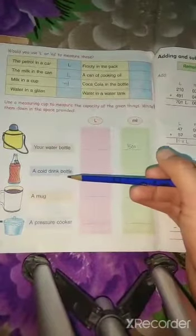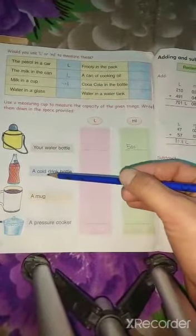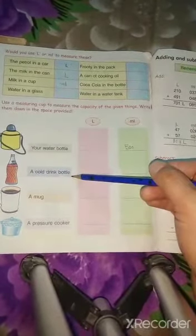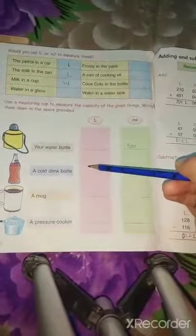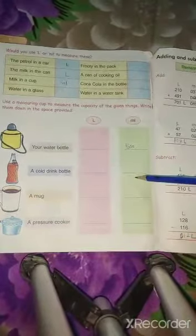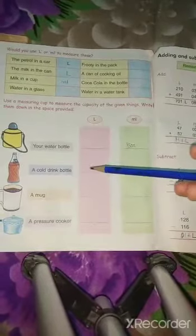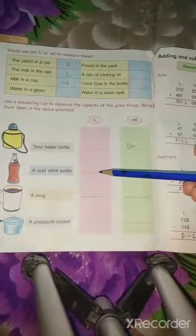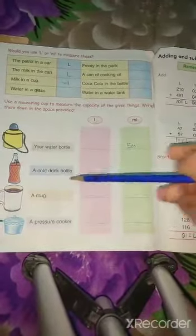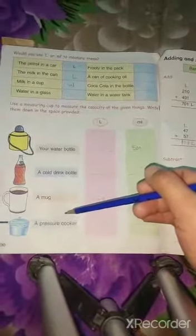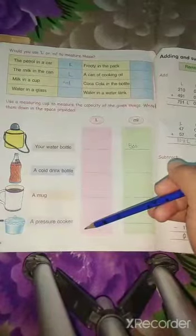Next three, practice at home. Next is a cold drink bottle. Cold drink bottle जो होती है, बेटा, you have to write its measurement here. जो हमारी cold drink bottle है, इसमें कितनी cold drink आ सकती है. Next one is a mug. And last one is a pressure cooker.